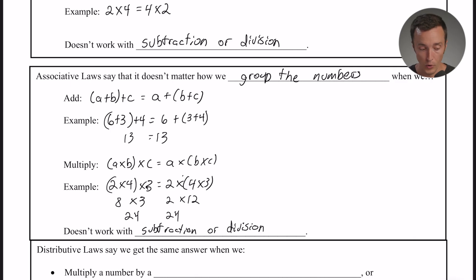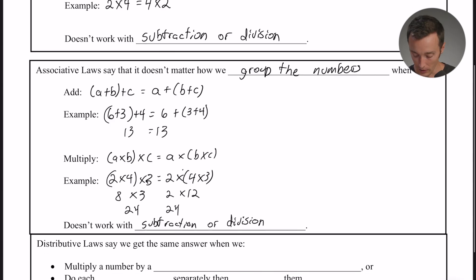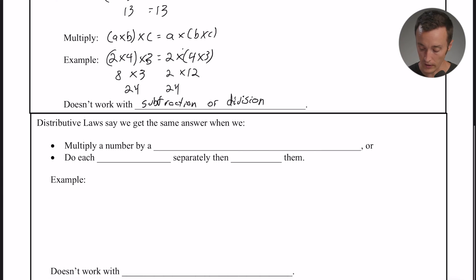But the distributive property is a little bit different. This distributive law says we get the same answer when we multiply a number by a group of numbers added together, or when we do each multiply separately and then add them. That sounds a little bit weird in words - it's easier if you see it with numbers.